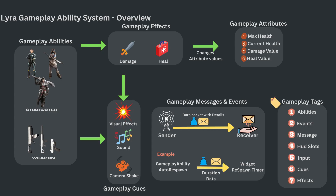Gameplay Ability System or GAS is a framework developed as a plugin by Epic Games. GAS makes game development much easier and it speeds up the development of RPG type of games with different abilities for the characters. It also supports multiplayer features with a ready-to-use and easily maintainable approach.